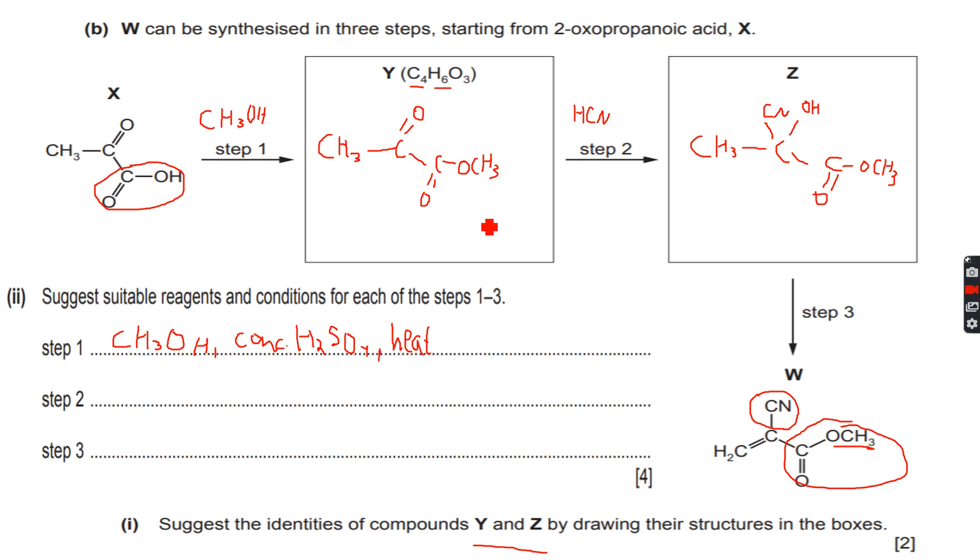These are the reagents and the conditions for step 1. Now step 2 was a nucleophilic addition reaction in which we just add HCN at room temperature—we don't heat it, we do nothing, the HCN is added at room temperature. We have done this in the carbonyl compounds chapter, and the first one we have done in the alcohols, esters, and carboxylic acids chapter, so you must be remembering that from the AS series.